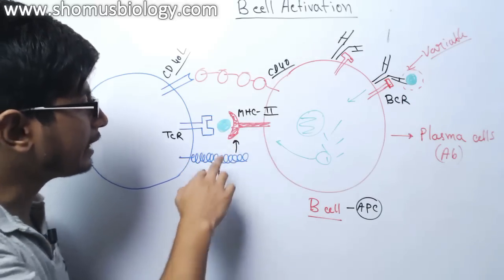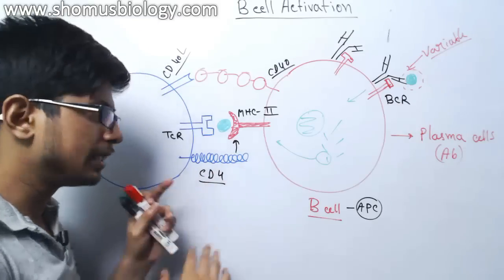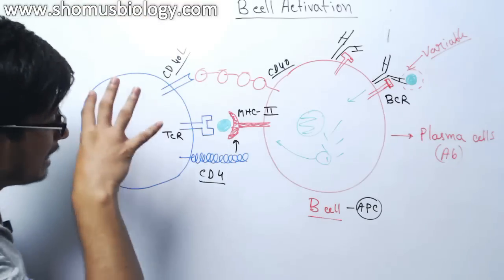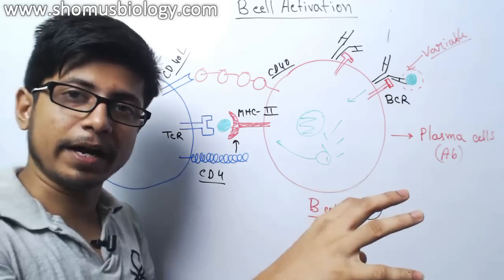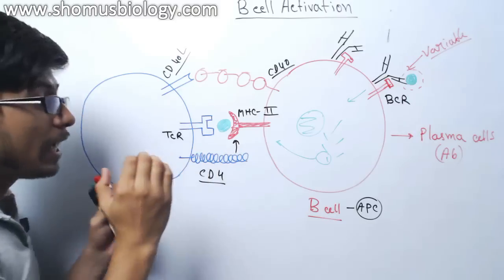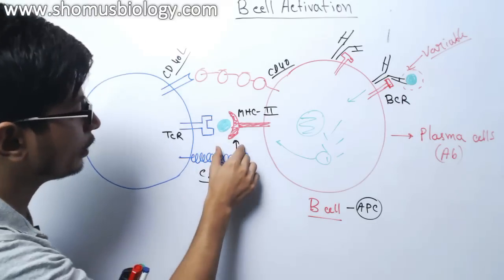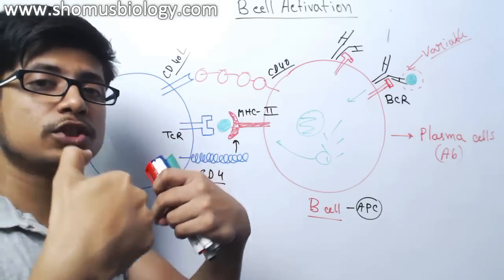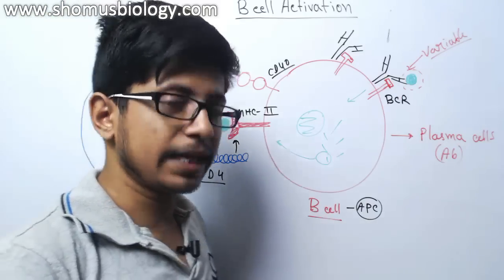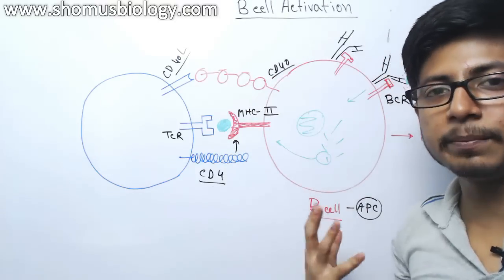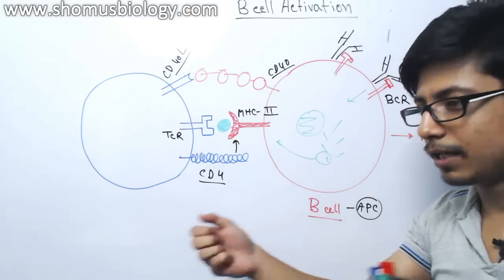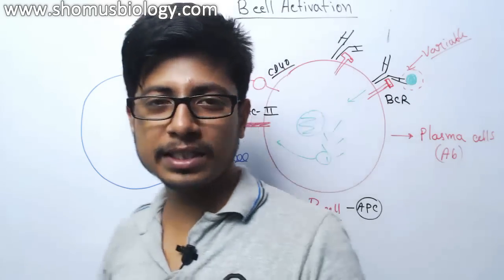Once the TCR–MHC2 interaction is confirmed and the T cell recognizes the antigenic portion, from a huge population of T cells, the specific T cell that can identify the antigen presented by MHC2 is selected. Once the binding is proper, CD4 makes this binding much stronger by engaging with both TCR and MHC2. Once the interaction is strong enough, they engage in proper interaction and start releasing chemokines — chemical signaling molecules — which will help the B cell to get differentiated, initiating a molecular crosstalk between T cell and B cell.